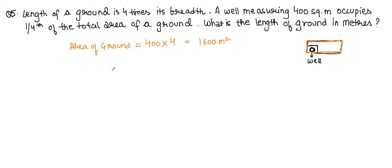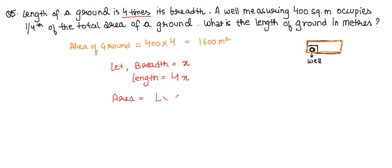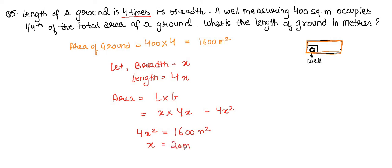Let the breadth be x, so length = 4x. Area = length × breadth = x × 4x = 4x². Setting 4x² = 1600, we get x² = 400, so x = 20 metres. Therefore breadth = 20 metres and length = 4 × 20 = 80 metres.